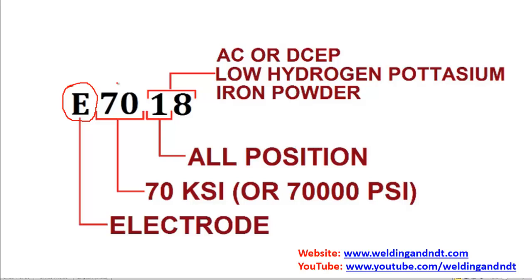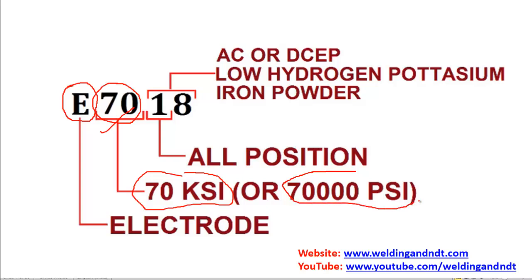The first two digits after E — that is '70' — represents the minimum tensile strength which will be obtained from the welding done by this electrode. So the minimum tensile strength is 70, and the unit is KSI: 70 KSI, or if you multiply by 1000, it becomes 70,000 PSI. PSI stands for pounds per square inch and KSI is kilo pounds per square inch. So the first two digits represent the mechanical tensile strength.